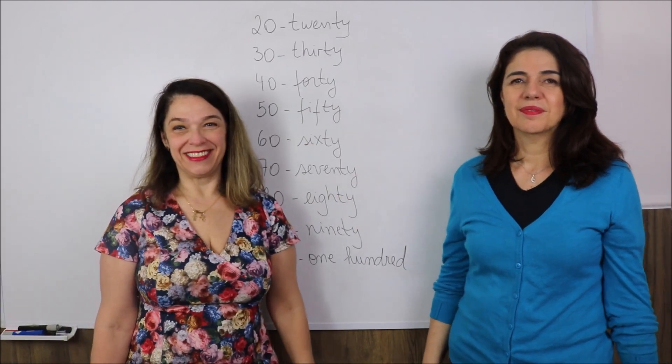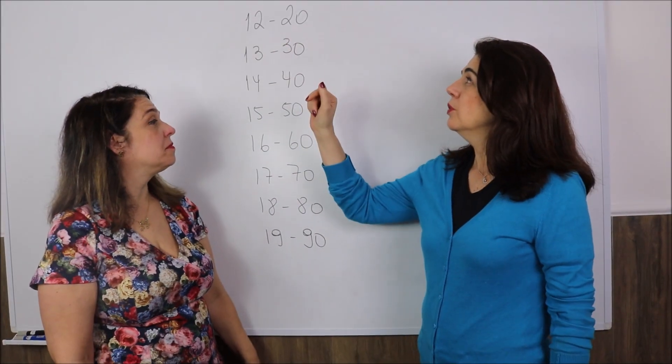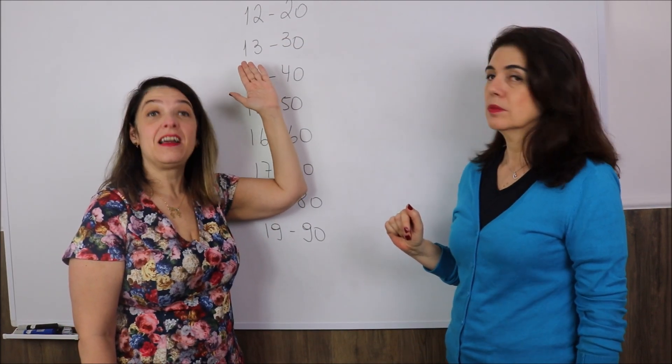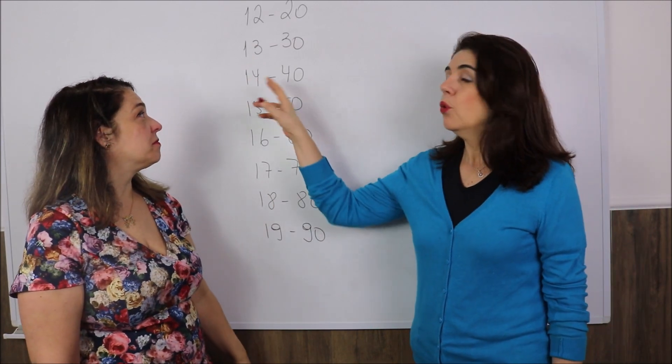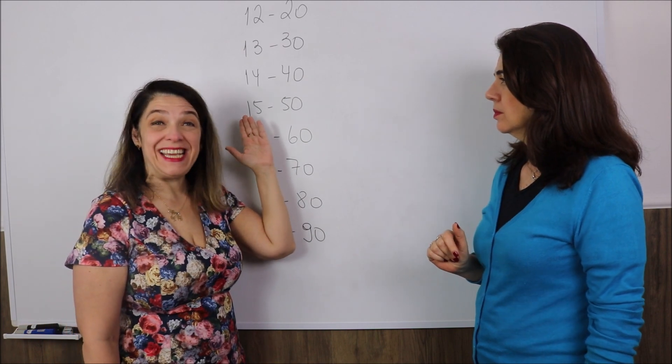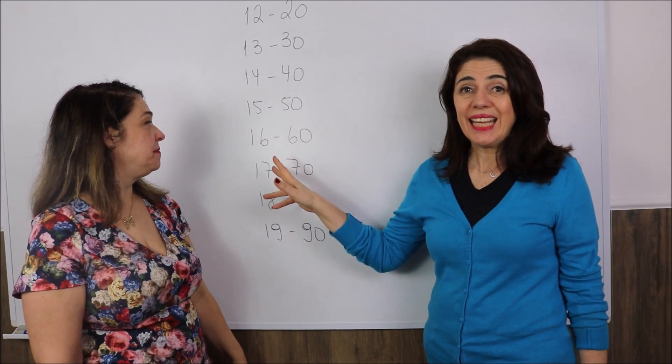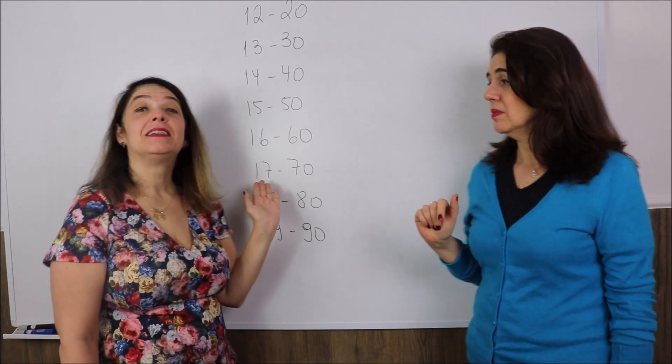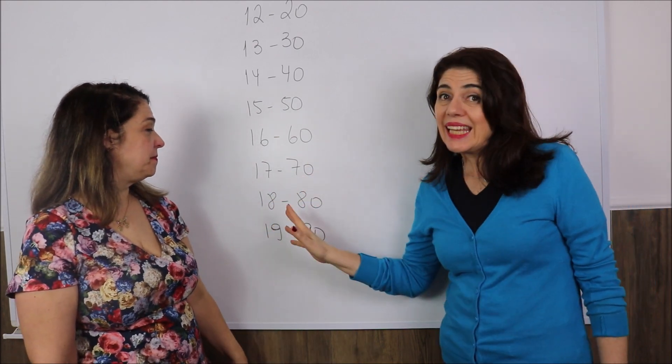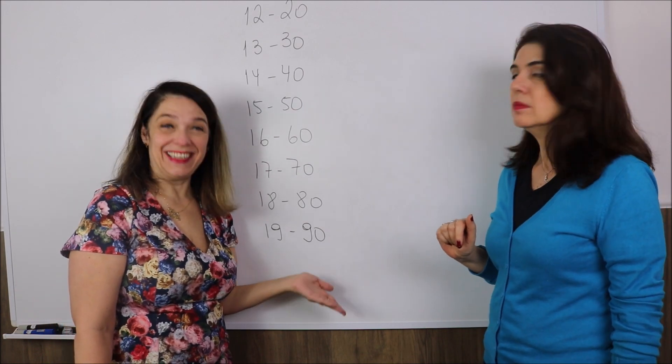Now let's compare these pairs. Twelve, twenty. Thirteen, thirty. Fourteen, forty. Fifteen, fifty. Sixteen, sixty. Seventeen, seventy. Eighteen, eighty. Nineteen, ninety.